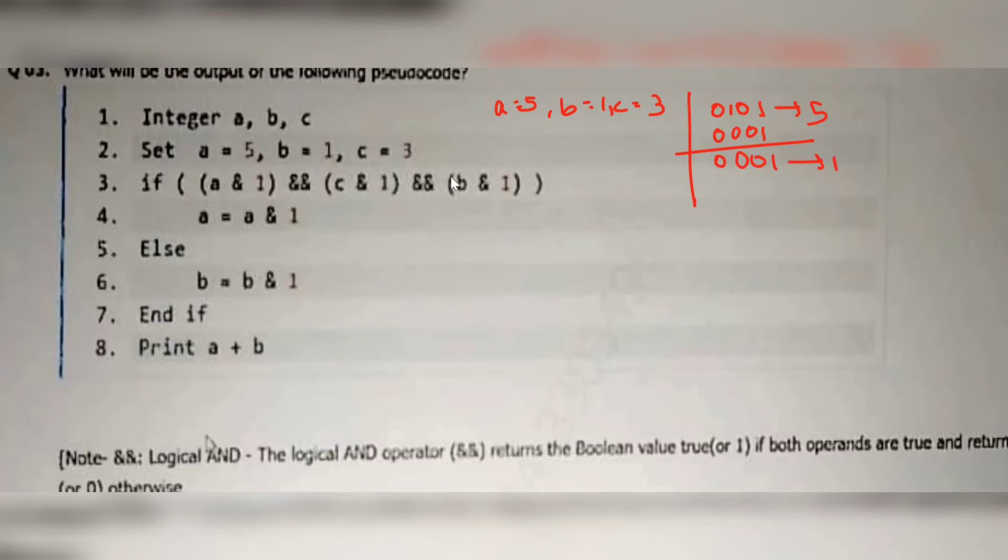Output is 1 means A and 1 that is 1 and C and 1. C means 3 means 0011 and 1, 00001. So output is 00001. Here the output is 1 and B and 1. B is 1 means 00001 and 1, 00001. So the output is 1 only.